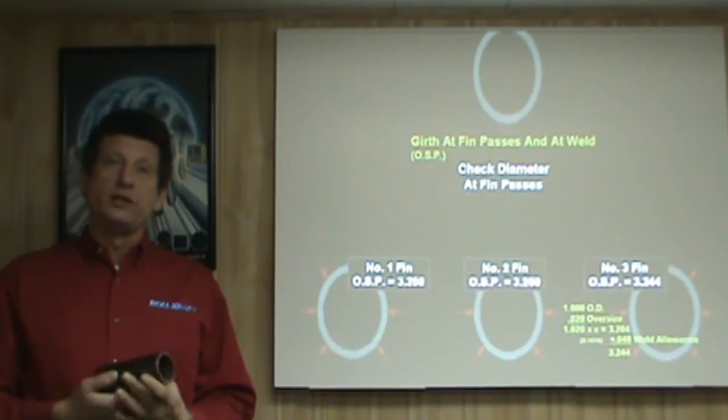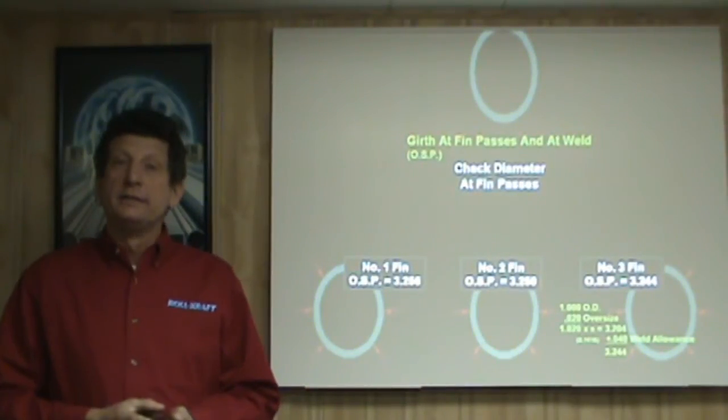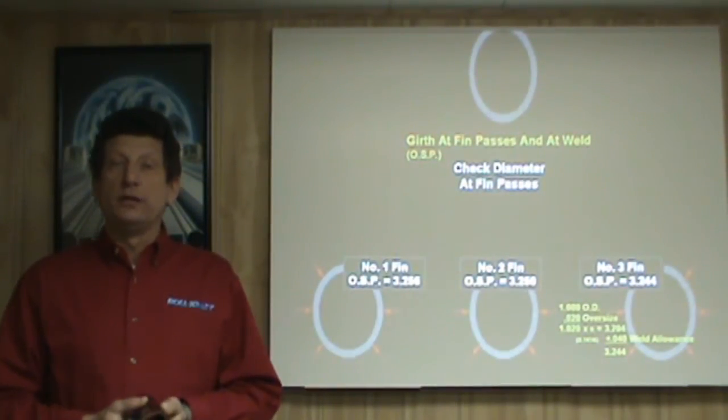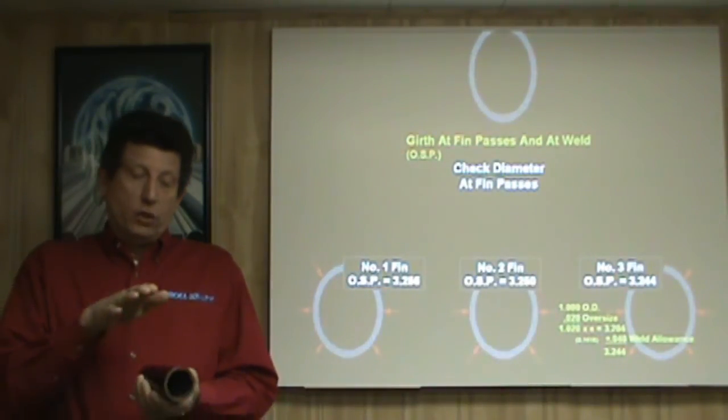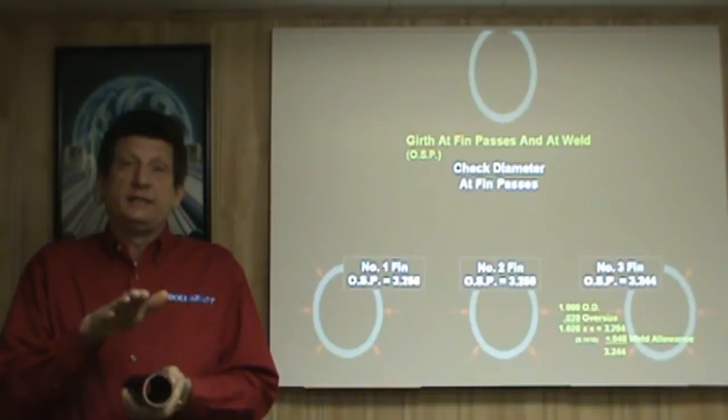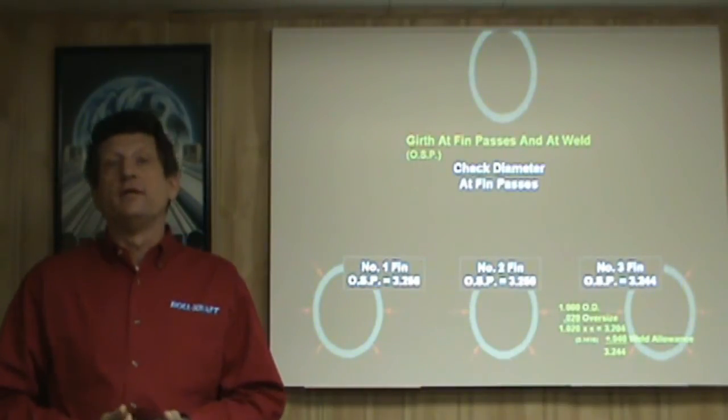But in the tube and pipe mill industry, we weld our product, so we have to have increased strip width, or what we call welding allowance, to perform this. So this welded tube size becomes the main focal point of most strip width calculations in the industry.